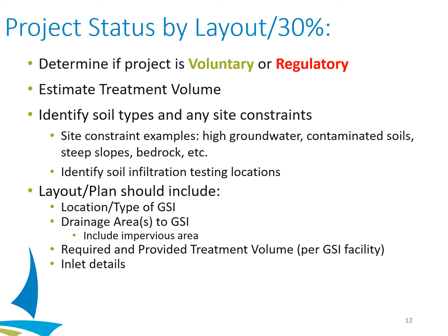If we are a regulatory project that must meet the stormwater ordinance, we should immediately understand our requirements: what our water quality requirements are, what our treatment volume is estimated to be, understand our soil types and major site constraints such as high groundwater, contaminated soils, or bedrock, and start identifying any further testing needed to understand our infiltration rates. By layout, we should already start having GSI or other stormwater management devices located on the plan, understanding their drainage area and how much impervious area is draining to each. We'll want to have a required and provided treatment volume for each GSI facility, and start seeing inlet details and cross sections of the stormwater management used to meet the ordinance.